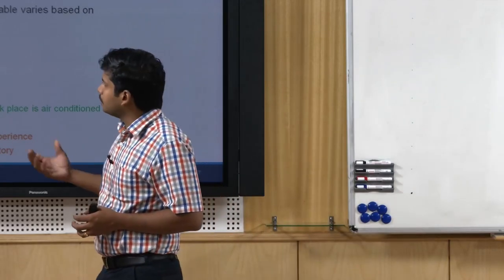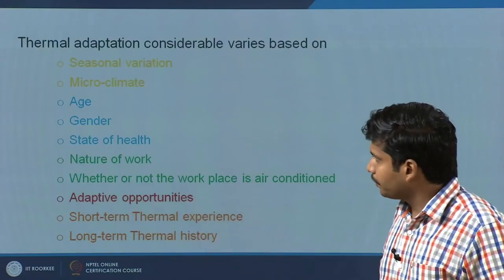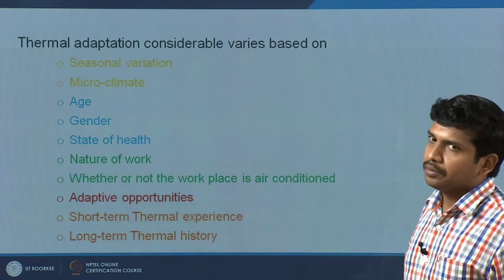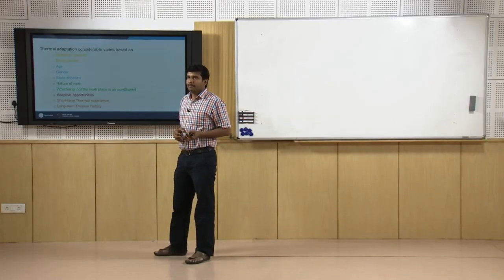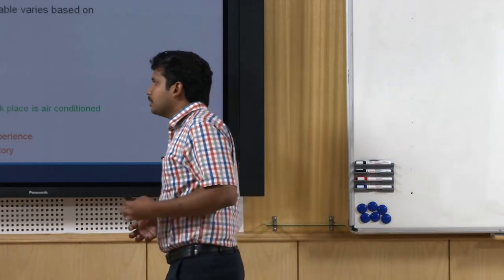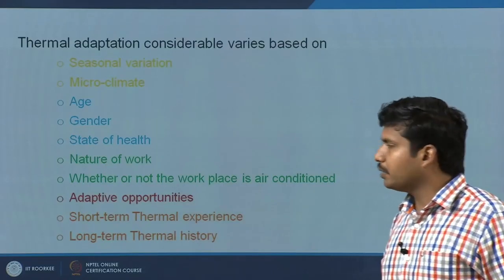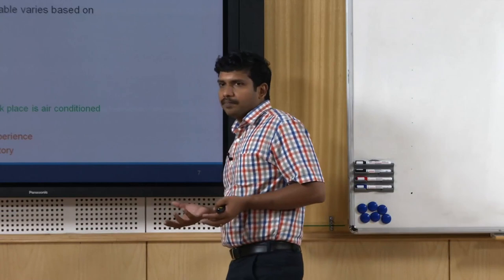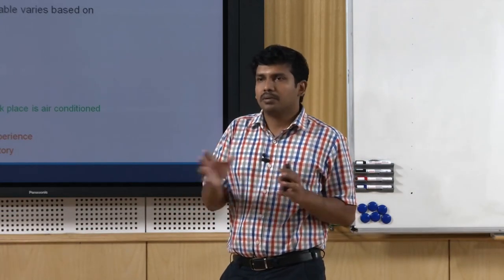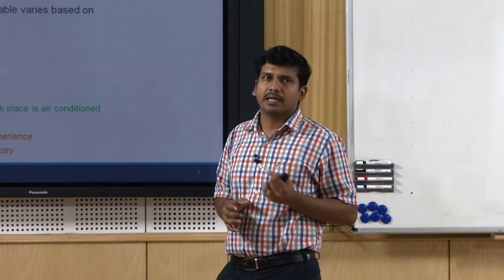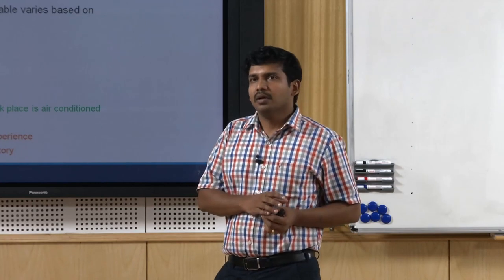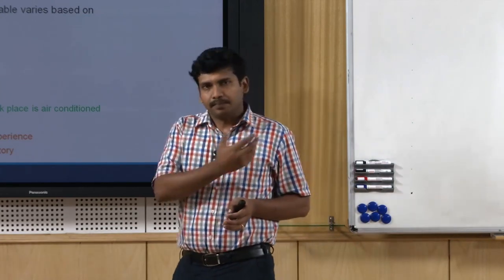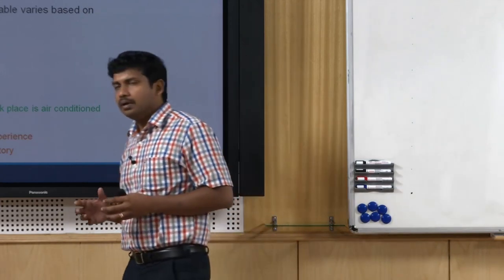For example, older people did not complain much about heat discomfort during summer, but had more complaints about cold discomfort during winter. Younger people under 20 had a preference for lower temperatures compared to people above 50. State of health has a clear impact. The nature of work also matters — both the metabolic activity determining the MET value, and whether you are bound to your seat, like an IT professional or student in a classroom without personalized control over fan or air conditioner, versus someone with a single cabin who has more flexibility.